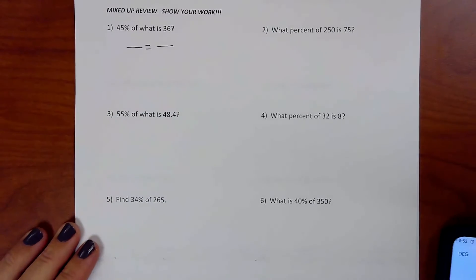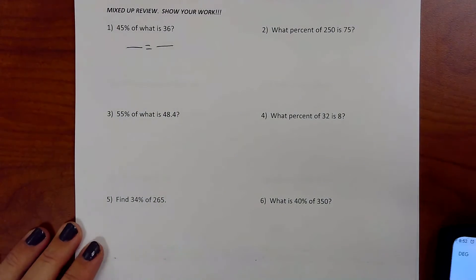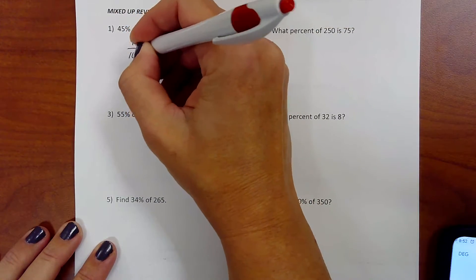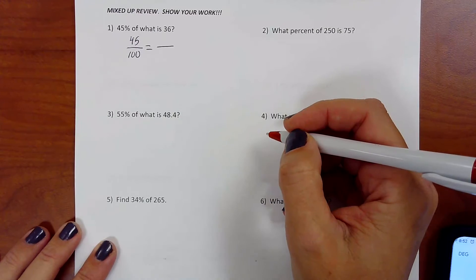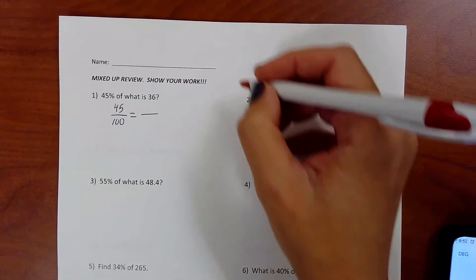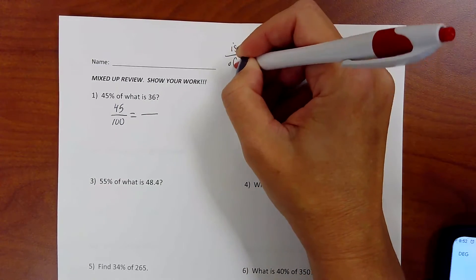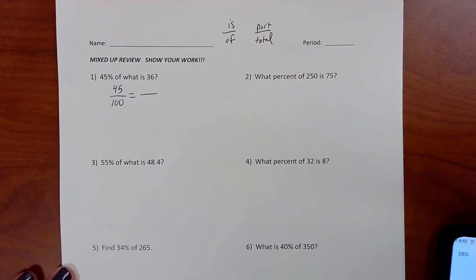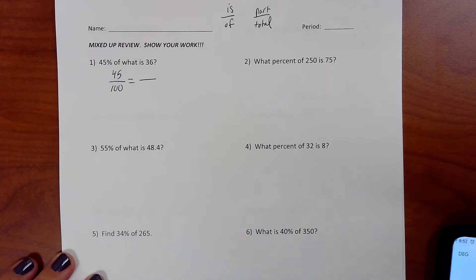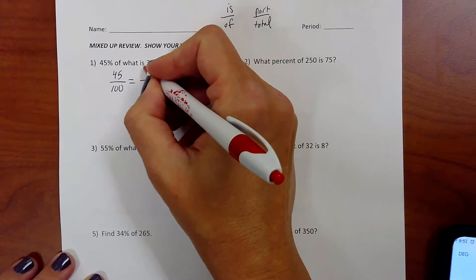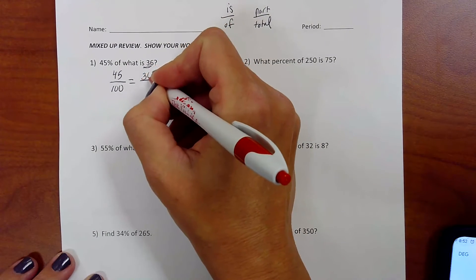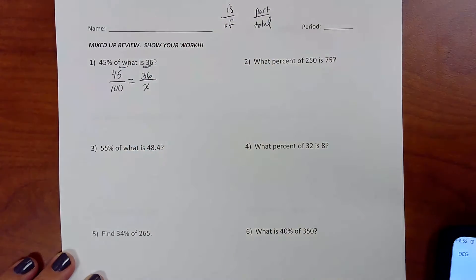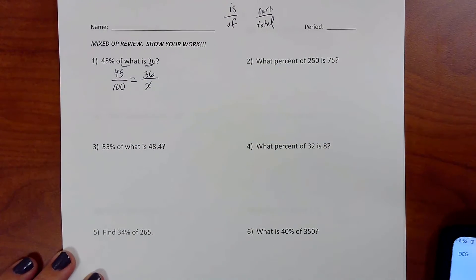All right, number one, 45% of what is 36? Okay, so 45 over 100, that part's done. And if it helps you at the top, maybe you could write is over of, or part over total, however you like to think about it, you can refer to that. So I'm looking at is 36, that means 36 is up top. Of what? That's on the bottom. And here we go.